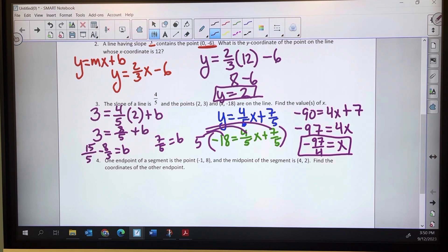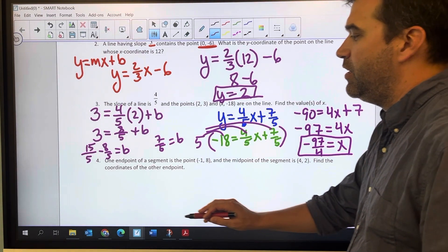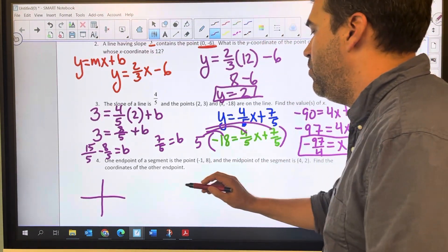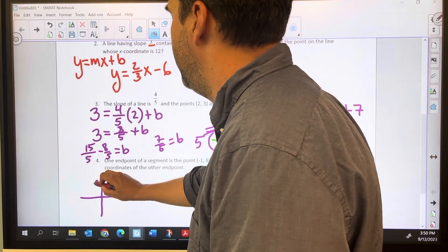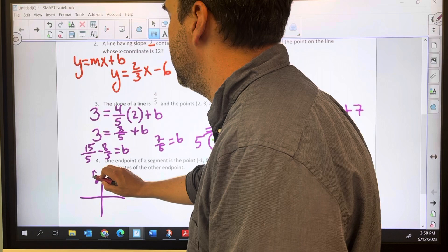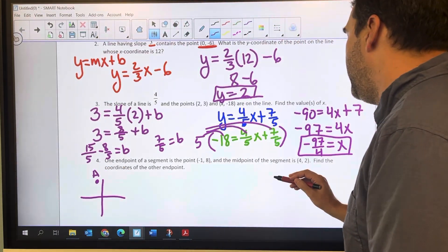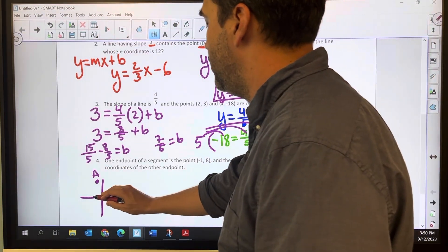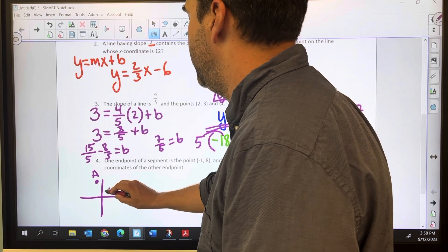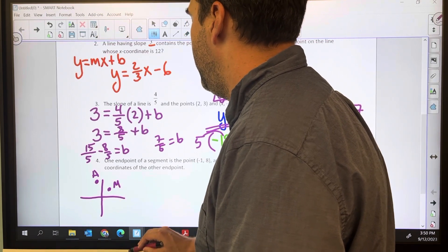Number 4, we've got endpoint and midpoint, and we're looking for the other endpoint. If we're having trouble picturing this, we're going to draw a quick picture, just a little sketch. We've got negative 1, 8 for one endpoint. Let's call it A, and the midpoint is at 4, 2. Let's call that M, and we're looking for B.